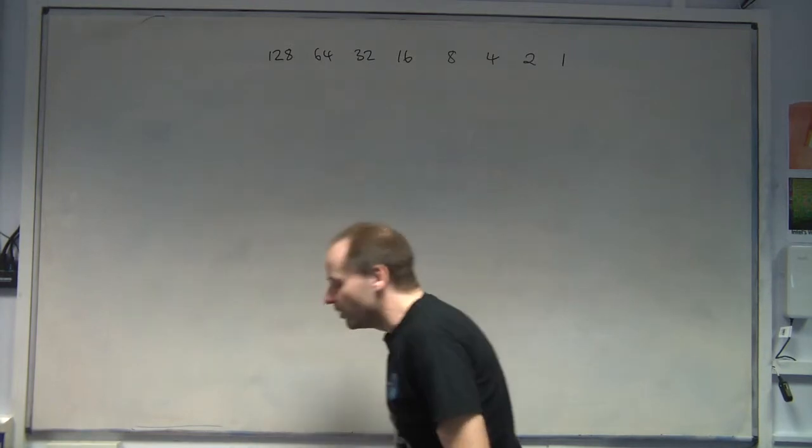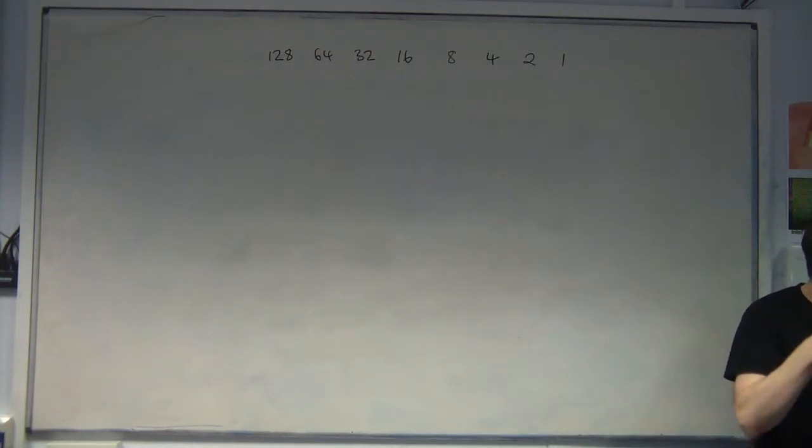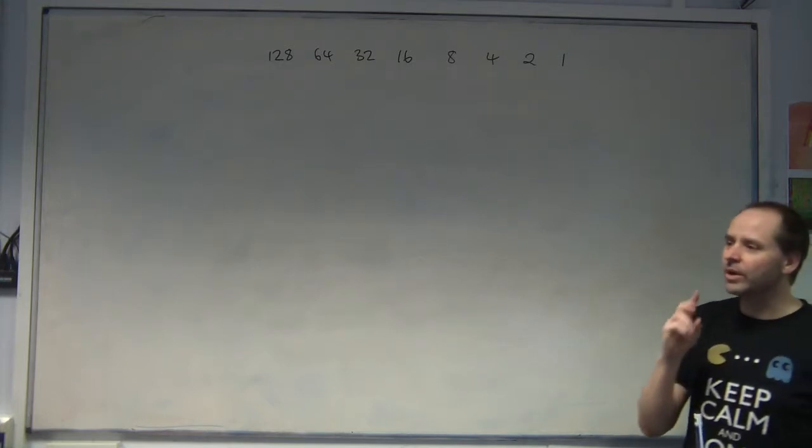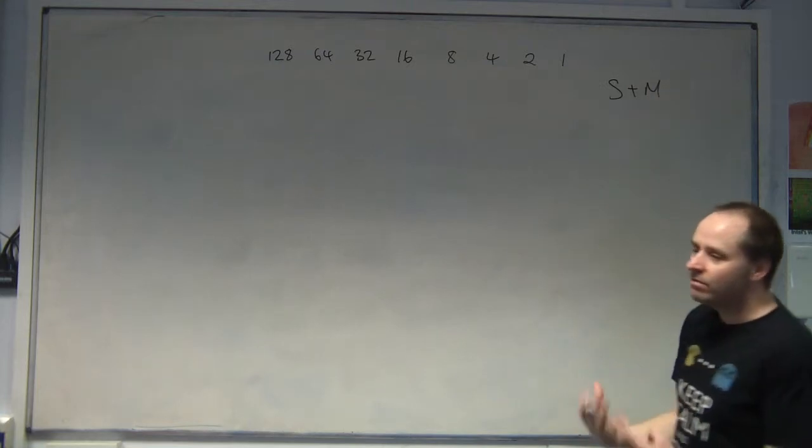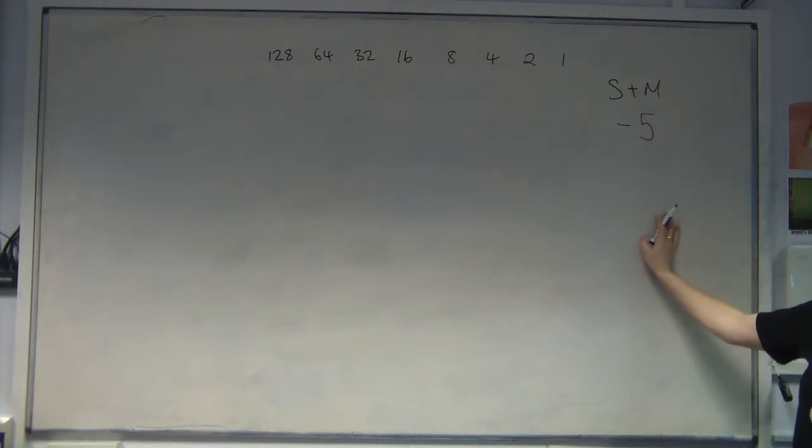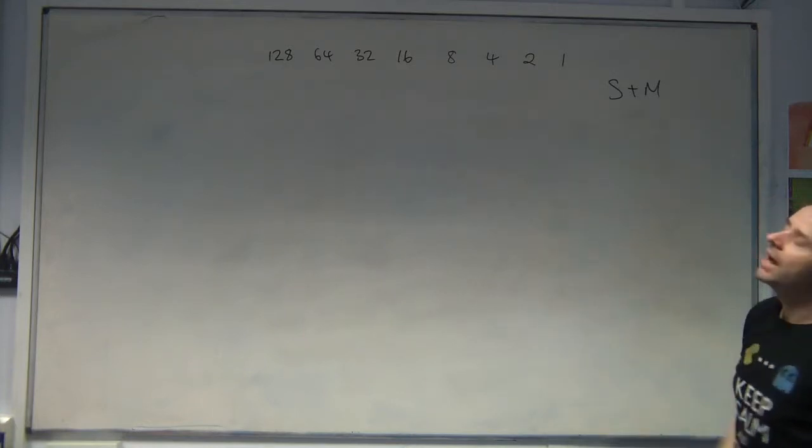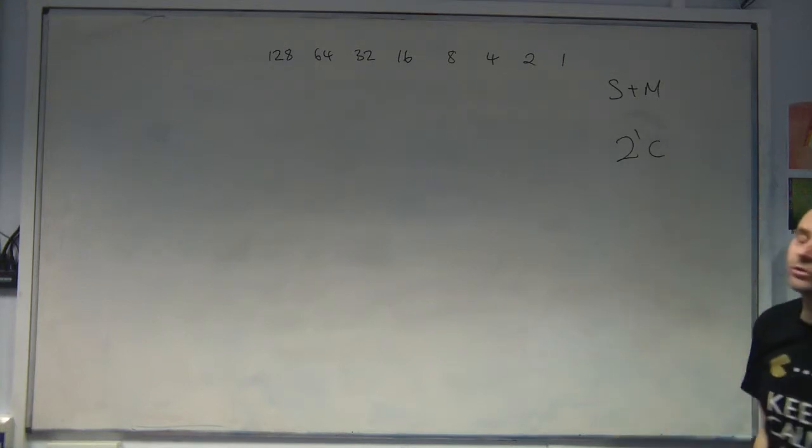But it gets more interesting when we want to record negative and positive numbers, which we call signed numbers. And we've got two methods: sign and magnitude, which is the way we write numbers, so we put minus 5, as in minus 5. And the proper way, which is what the computer does, 2's complement, or 2c.